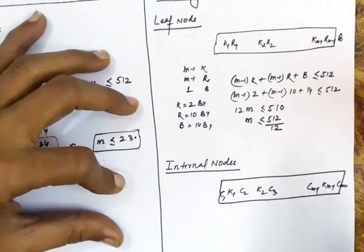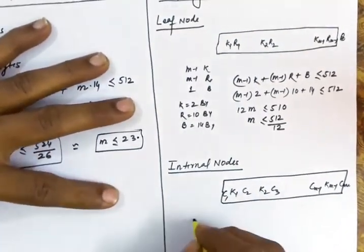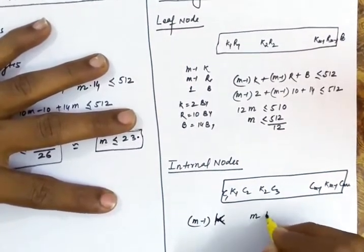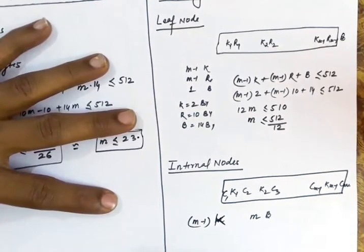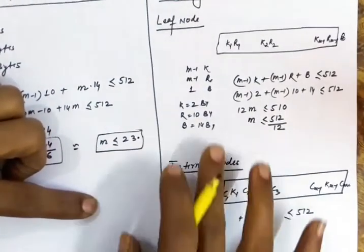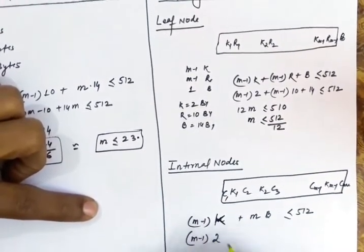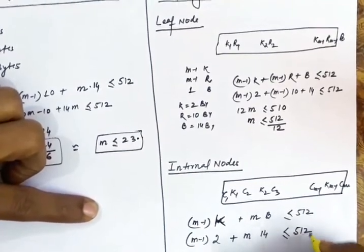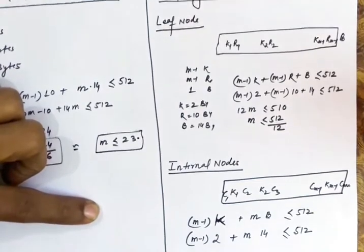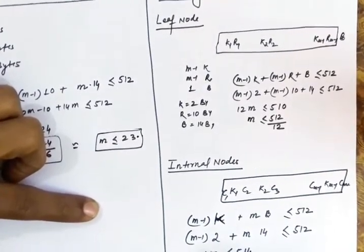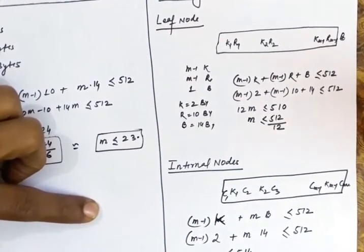The internal nodes are not linked up to each other, so we do not need to store the address of the next node. The internal node structure has m-1 key values and m child node block addresses, and this should be less than or equal to 512. Using the same example — key of 2 bytes and block addresses of 14 bytes — this gives 16m ≤ 514, so m is less than or equal to 514 divided by 16.